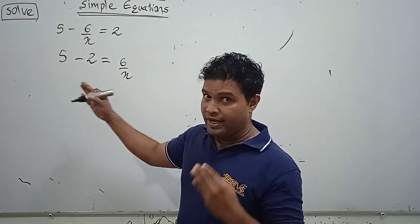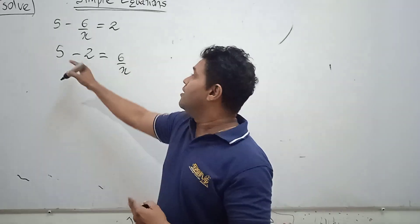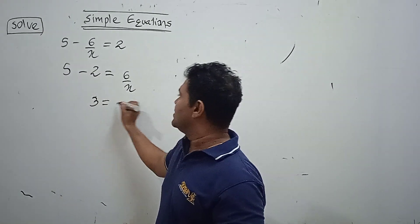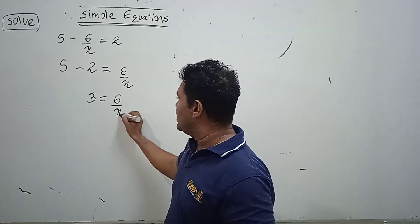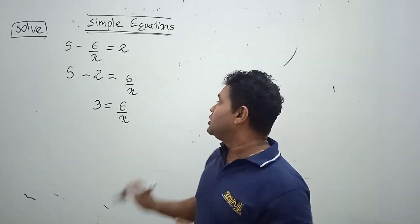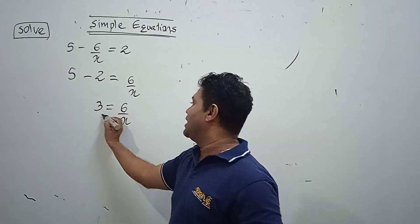Now you can simplify numerics separately. In the left side, 5 minus 2 is 3, this is 6 upon x. You want x, now you can finally get the cross multiplication.